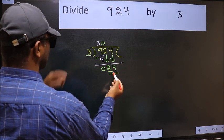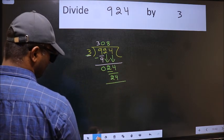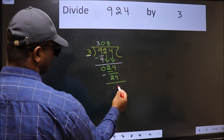When do we get 24 in 3 table? 3 times 8 is 24. Now we should subtract. We get 0.